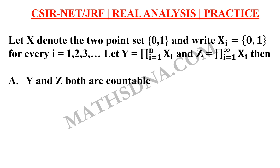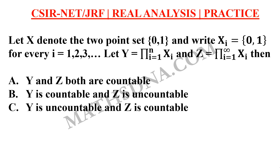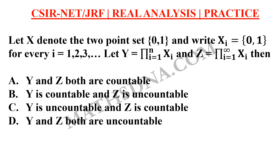Then the options are: A. Y and Z both are countable. B. Y is countable and Z is uncountable. C. Y is uncountable and Z is countable. And D. Y and Z both are uncountable. Comment your answer below in the comment box.